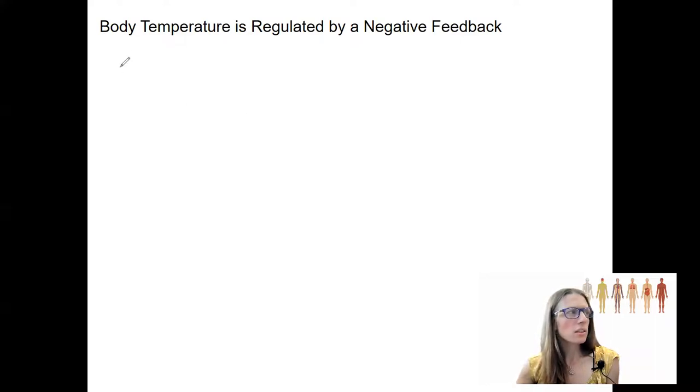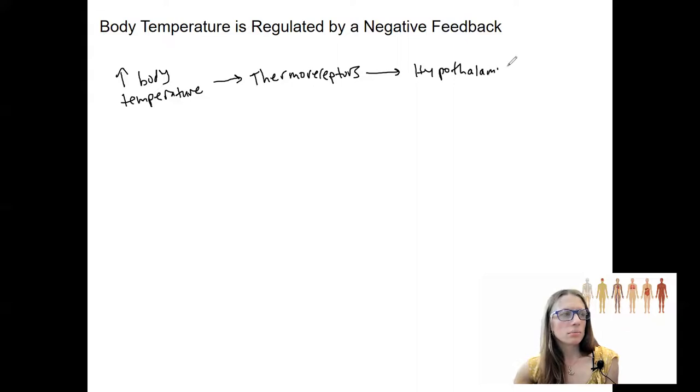So let's start with high body temperature. So let's say we have an increase in body temperature. Conditions cause this. Maybe it's 100 degrees out. Maybe you're exercising. Maybe both. Let's say that happens. That means we are going to have that detected by thermoreceptors.